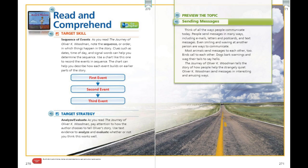Think of all the ways that people communicate today. People send messages in many ways, including emails, letters, postcards, and text messages. Even smiling and waving at another person are ways to communicate. Most animals send messages to each other, too. Birds call to each other. Dogs bark warnings and wag their tails to say hello.